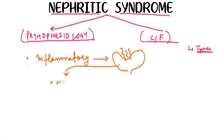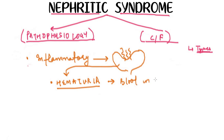As a result of the inflammation in the glomerulus, the first thing that will happen is hematuria. The first and foremost finding that helps us to know this is a nephritic syndrome is hematuria — that is, we will have blood in our urine. Hematuria is the first clinical finding in case of the nephritic syndrome.